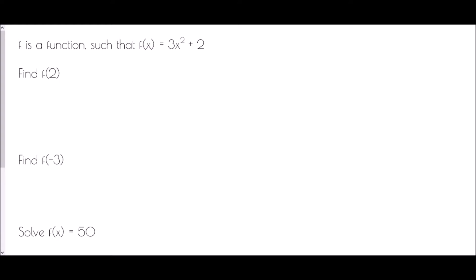We begin with f is a function such that f of x equals 3x squared plus 2. Now all this means is that when we see f of x, whatever number we replace for x here, we replace here as well. It is what is happening to that letter x in order to create an output. So it's all basically inputs — this is the input and this result is the output.